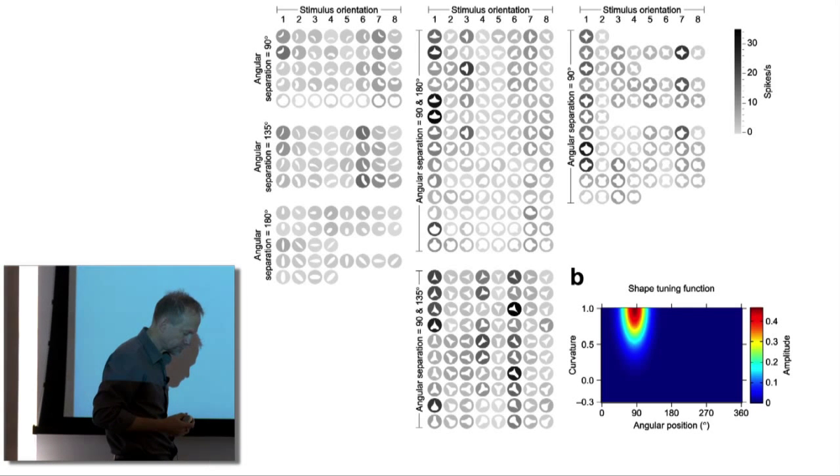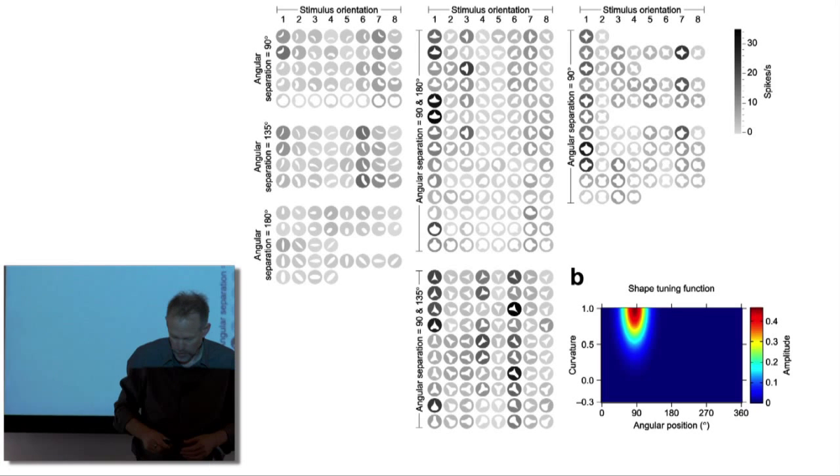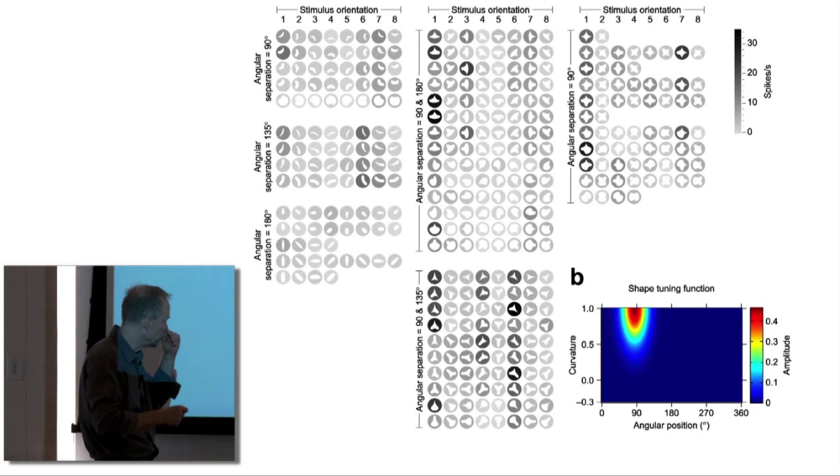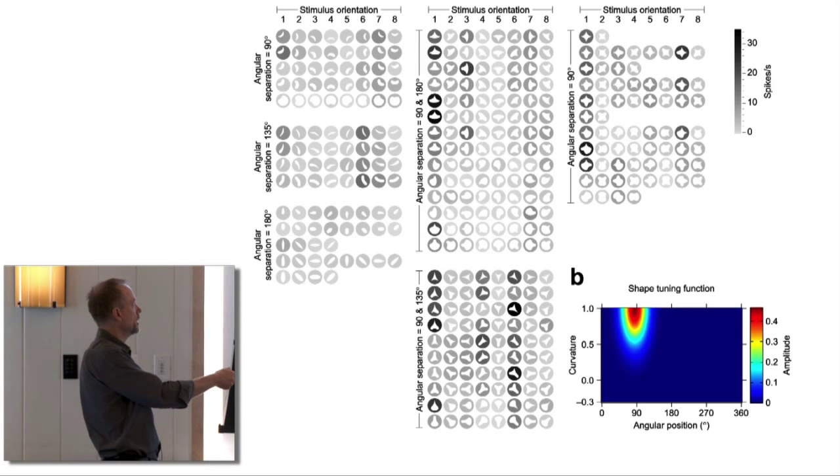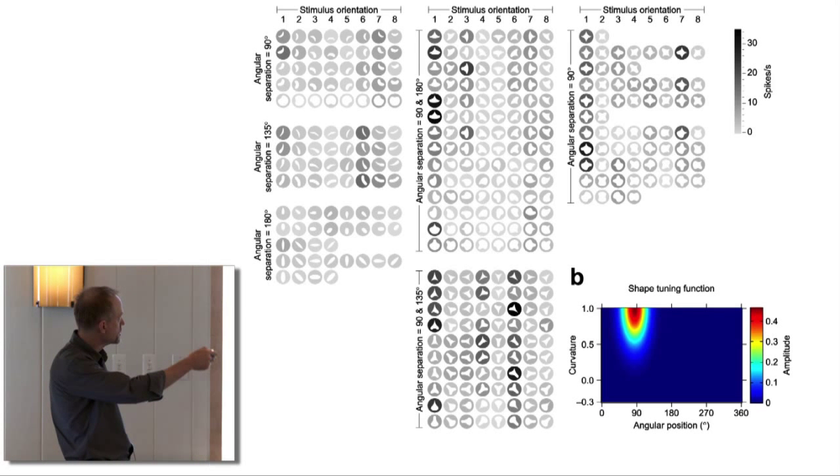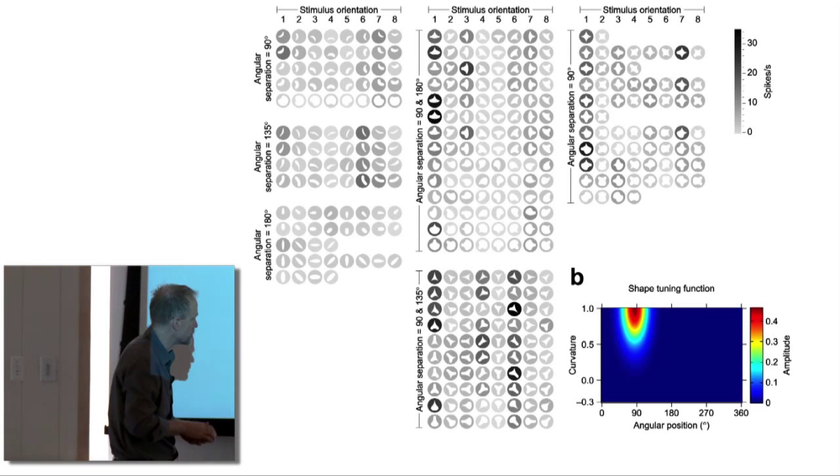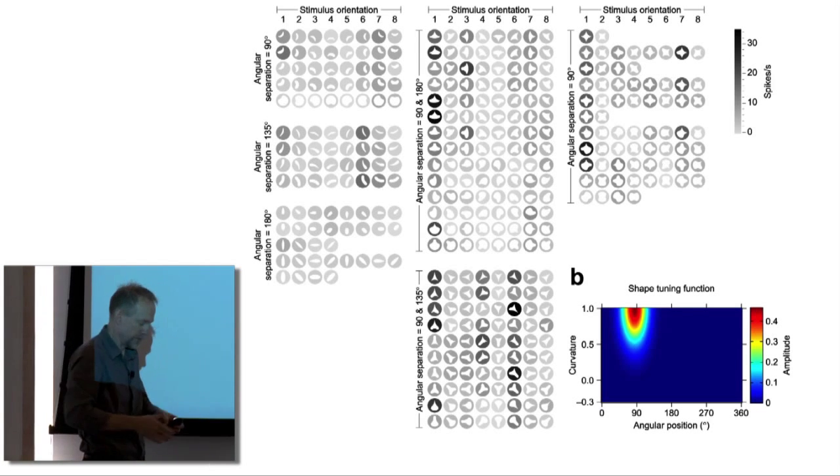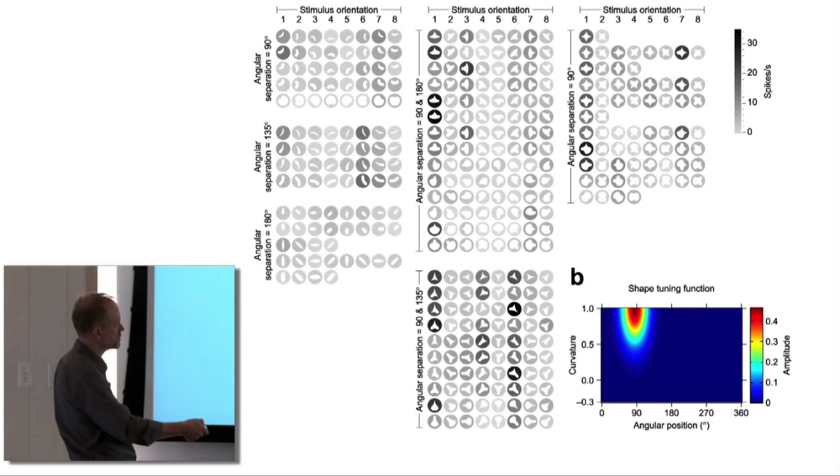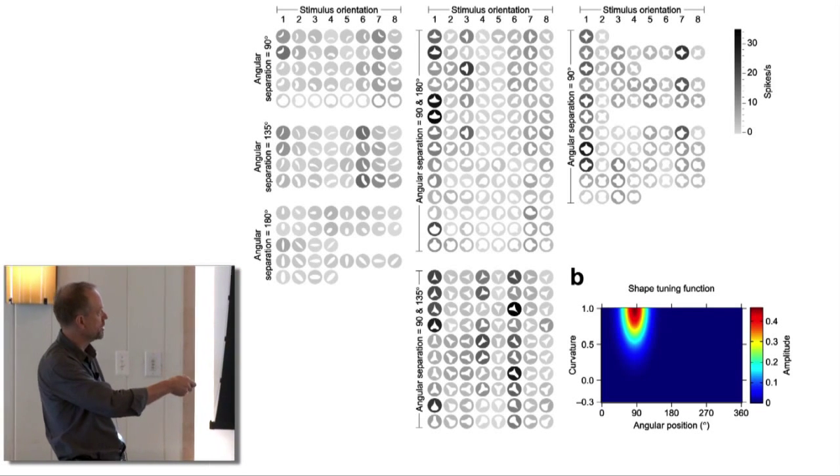We try to describe this with mathematical tuning functions. A very simple way of describing at least part of the variance of responses is to create a two-dimensional Gaussian tuning function. Our two dimensions are just position. You can describe position with one variable, angular position, where zero means off to the right of the object, 90 means near the top, 180 means towards the left, 270 towards the bottom.